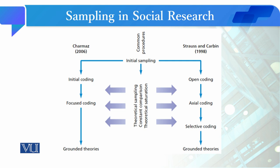Theoretical sampling की दो models हैं। जब data collect कर लेते हैं तो उसको analyze कैसे करते हैं — एक तरफ हमारे पास जो traditional model है, जिसको classical model भी कहा जाता है, जो Strauss and Corbin ने 1998 में दिया था। इसमें पहले data को open code किया जाता है, फिर उसकी axial coding की जाती है, और axial coding के बाद selective coding की जाती है, जिससे theory generate होती है।